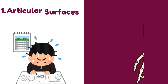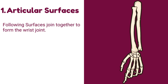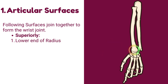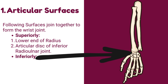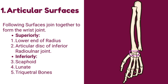Number 1: Articular surfaces of the wrist joint. The following surfaces join together to form the wrist joint. Superiorly: the lower end of the radius and the articular disc of the inferior radioulnar joint. Inferiorly: the scaphoid, lunate, and triquetral bones.